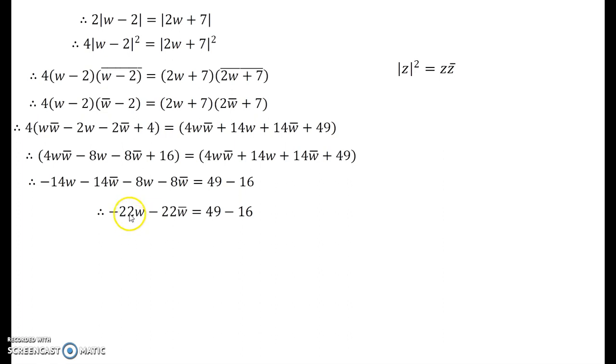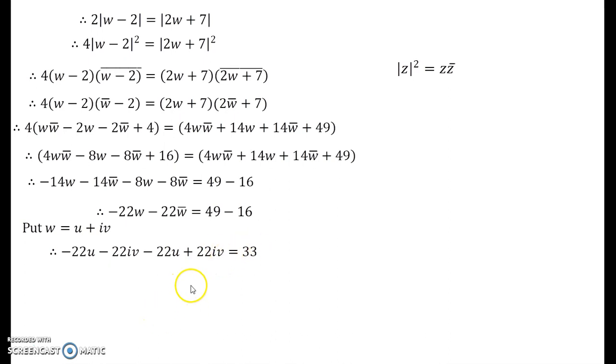Now is the trick to be played properly. Here, you put w = u + iv. We have already seen from the first video lecture that w is going to play the role as u + iv. Now you put w as u + iv. You get -22u - 22iv - 22u + 22iv = 33. On solving further, you obtain -44u = 33 and -4u = 3, and finally you obtain 4u + 3 = 0. That is what we wanted to show.